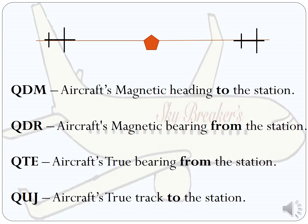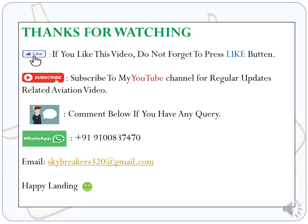These Q codes are not commonly used nowadays but you should know them. I hope you understand the basic definitions and all Q codes. Please write down each definition and Q code explanation. If you have any doubt, drop me a message and I can clarify. Thanks for watching — if you like this video, don't forget to like and subscribe to my YouTube channel for regular aviation related videos. Comment below if you have any query. Happy landing, thank you!